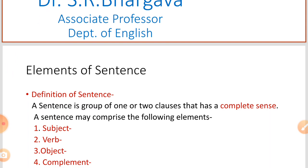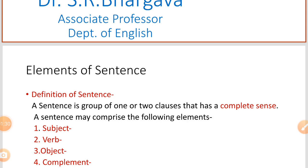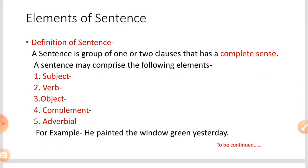First of all, I define what is a sentence. A sentence is a group of one or two clauses that has a complete sense. In a sentence, there are many elements that comprise the following: subject, verb, object, complement, and adverbial.